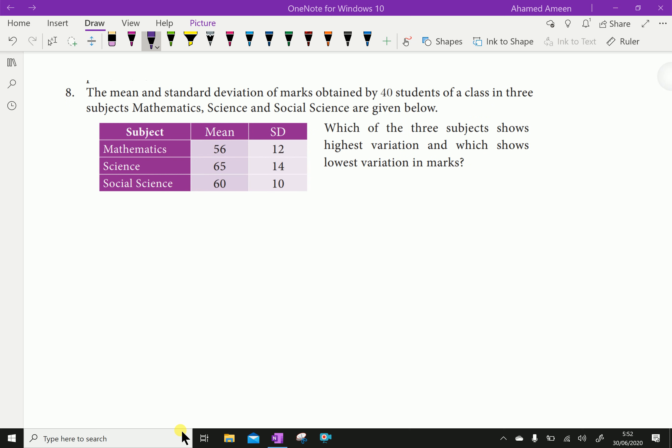The mean and standard deviation of marks obtained by 40 students of a class in three subjects - mathematics, science, and social science - are given below. Which of the three subjects shows highest variation and which shows lowest variation in marks?